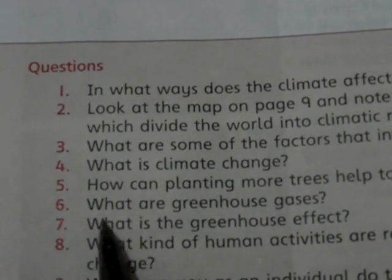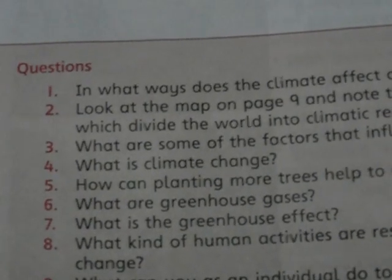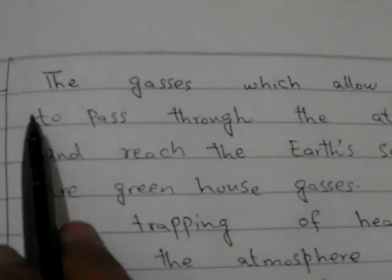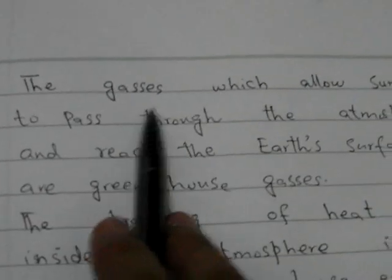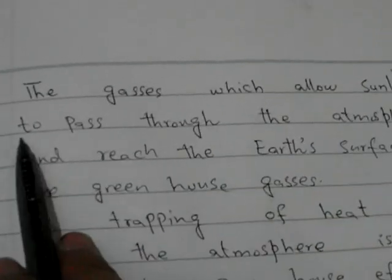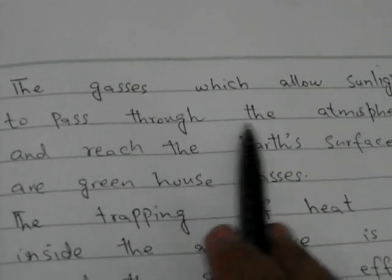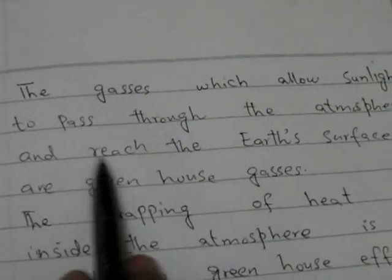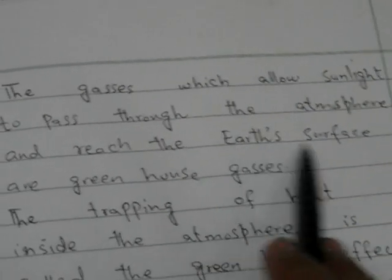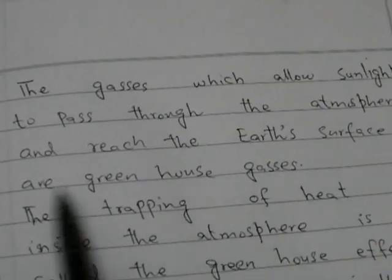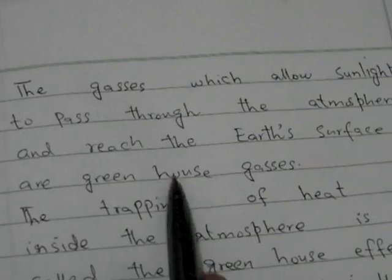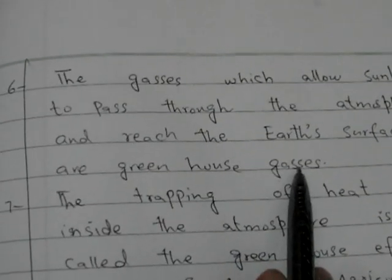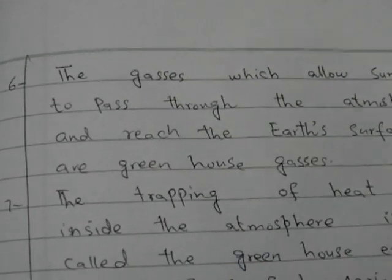Question six: What are greenhouse gases? The answer is: the gases which allow sunlight to pass through the atmosphere and reach the earth's surface are called greenhouse gases.